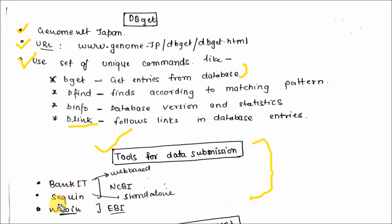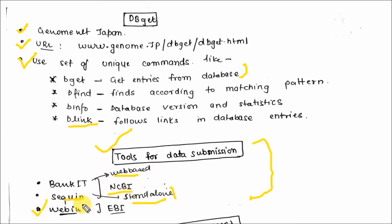These are the various tools for data submission to various databases: Bankit, Sequin, and Webin. Bankit is a web-based tool and Sequin is a standalone tool — that is, it doesn't require an internet connection to run the software. Bankit and Sequin are present at NCBI, while Webin is present at EBI and is also a web-based tool, not a standalone tool. So these are the tools for database search and data submission.